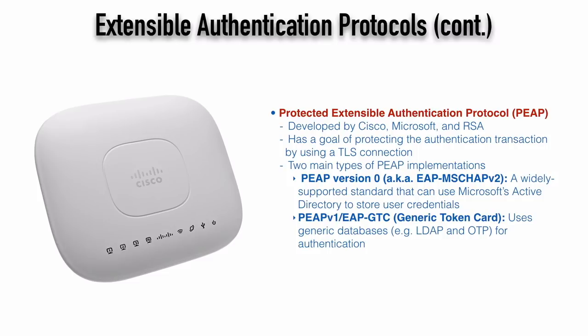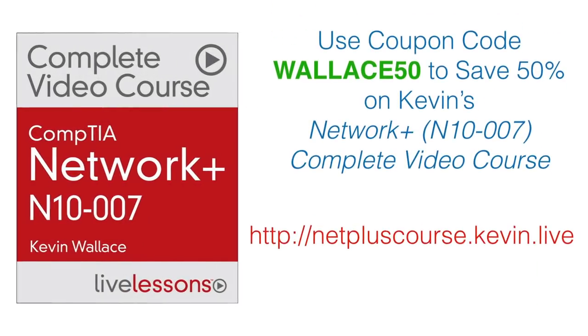That was a lengthy look at why we need wireless network security. We talked about the need to provide authentication and encryption, different encryption standards — RC4 was weak, TKIP was better, and AES was even better than that. We discussed personal mode or pre-shared key mode versus enterprise mode using 802.1x. And 802.1x uses some flavor of EAP — we covered EAP-TLS, EAP-FAST, and PEAP.